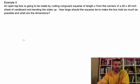Alright, on this problem we've got an open top box that we're going to make by cutting congruent squares of length x from corners of a 20 by 25 inch sheet of cardboard and bending the sides up. How large should the squares be to make the box hold as much as possible, and what are those dimensions?